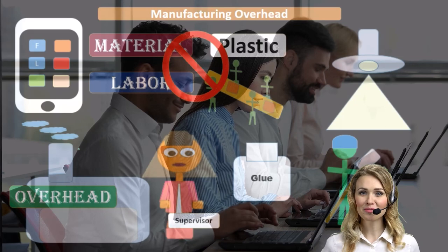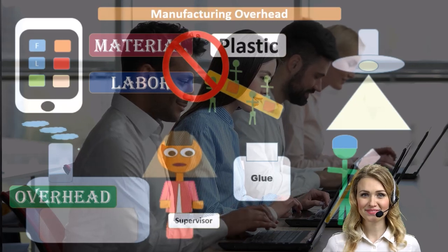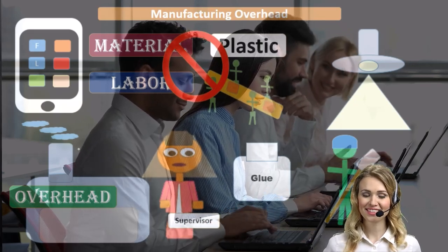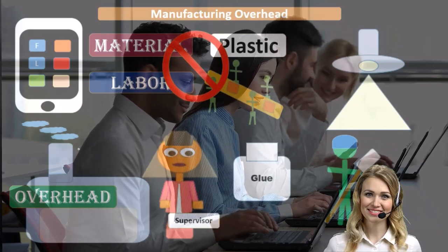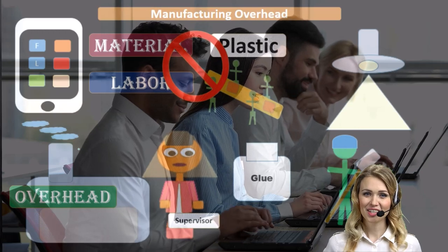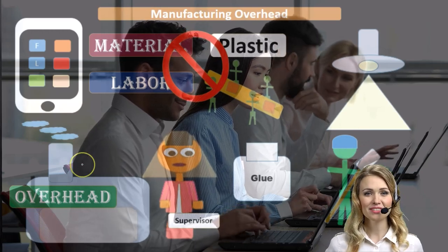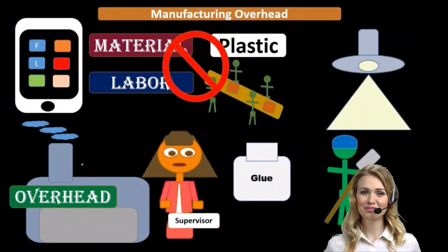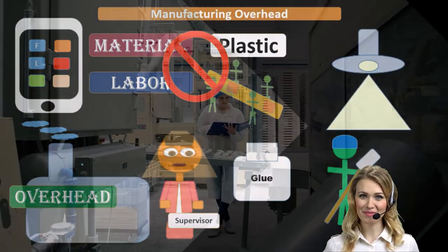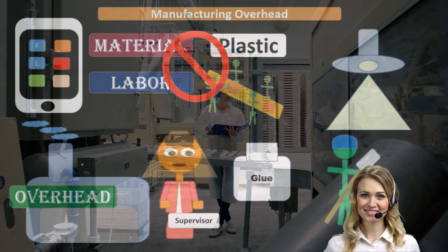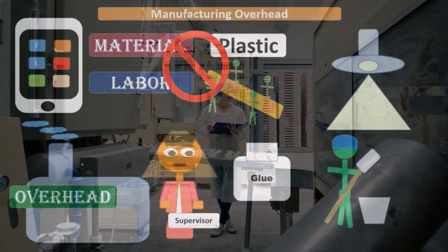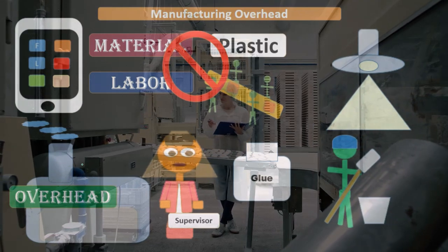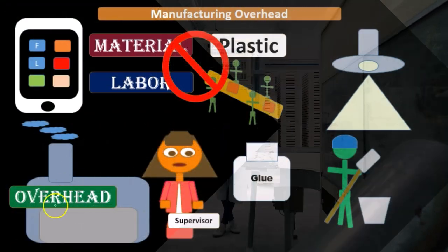Anything that says 'factory' on it, basically, and is involved in the inventory but can't be applied directly, would be included in overhead. Things like rent on the factory, depreciation on the factory, and depreciation on the equipment are some other examples.